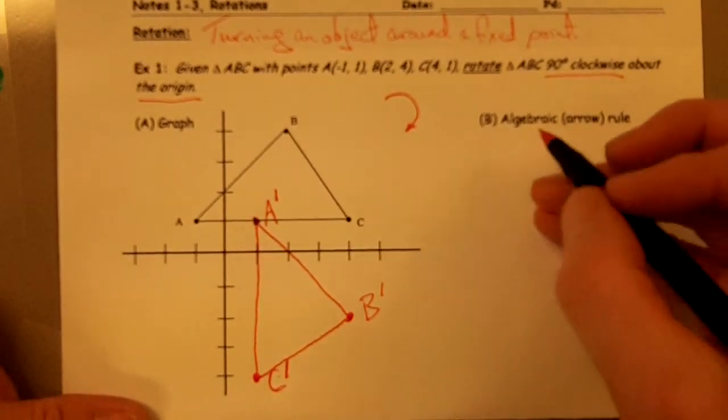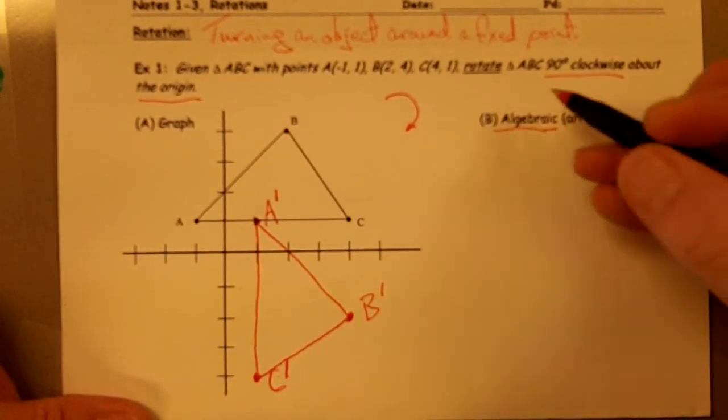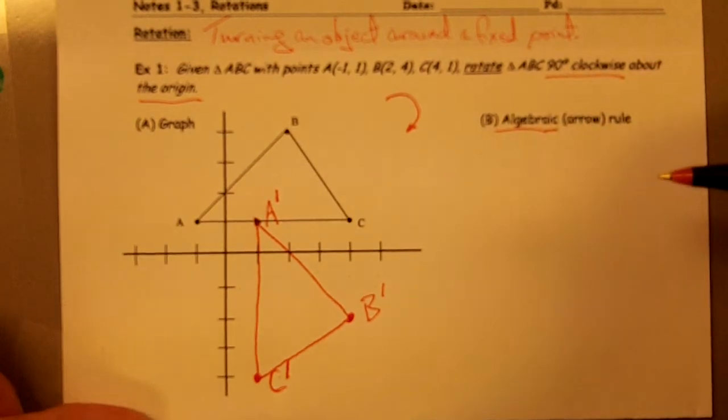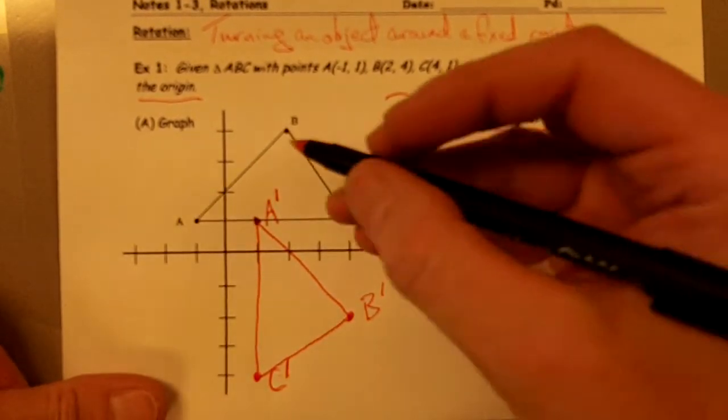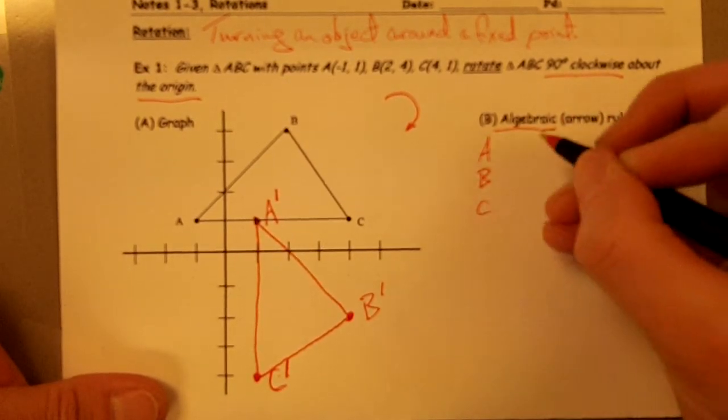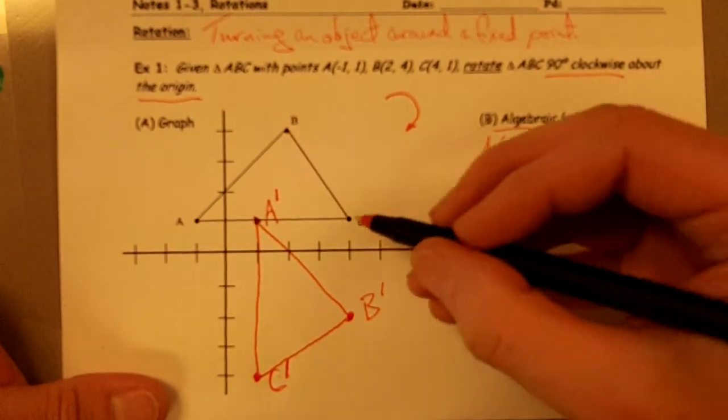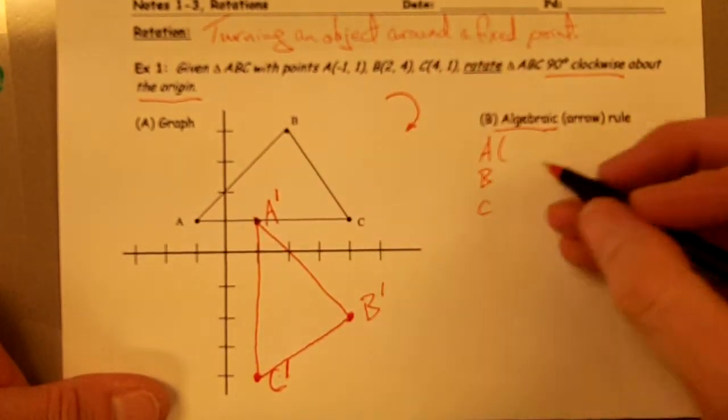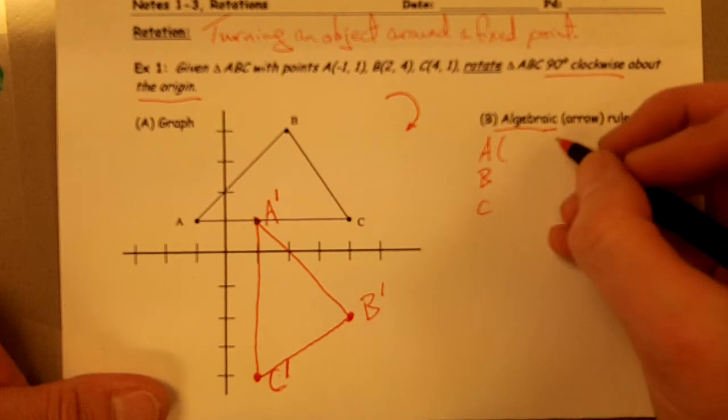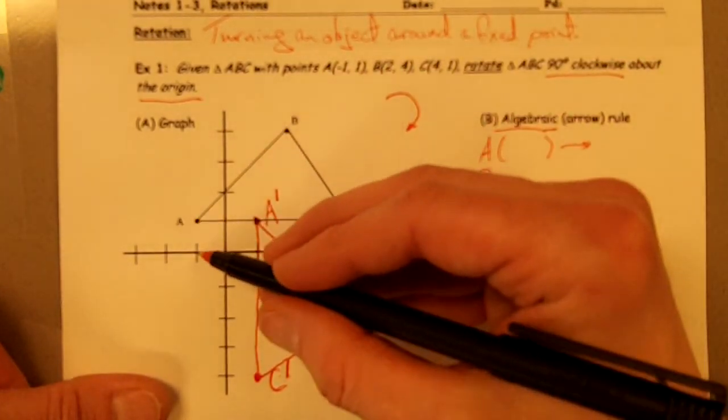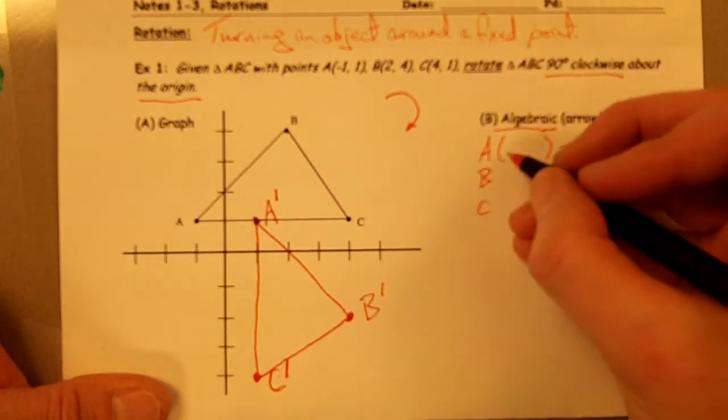Now I would like to see if I can come up with the algebraic rule for this particular transformation, rotating something 90 degrees clockwise around the origin. The way I'm going to do that, I want to take a look at each one of my three points, A, B, and C. And then I'm going to look at the coordinates of my transformed points, my rotated points, and see if I can figure out what the pattern is and come up with what the arrow rule is going to be. So point A, my point A is at negative 1, 1.